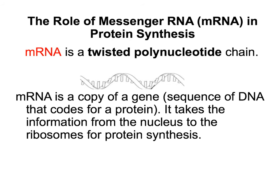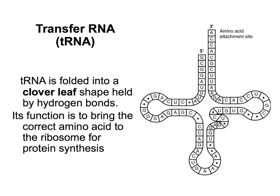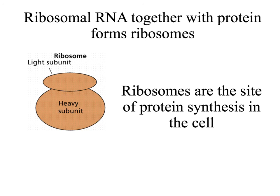There are three different types of RNA found in the cell, and all of them are very important for protein synthesis. They are all single-stranded molecules. Messenger RNA is a single-stranded copy of a gene. Transfer RNA is also single-stranded but it folds up into a clover-leaf shape held by hydrogen bonds. Ribosomal RNA complexes with proteins to form the cellular organelles ribosomes, which is where protein synthesis takes place.